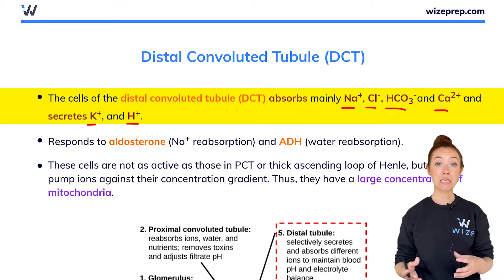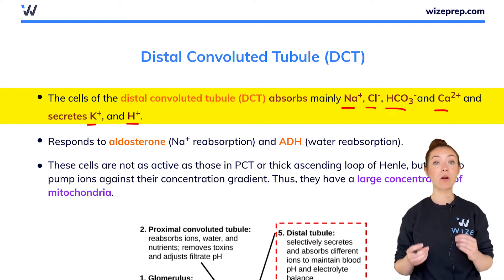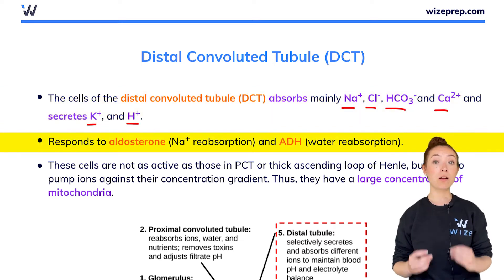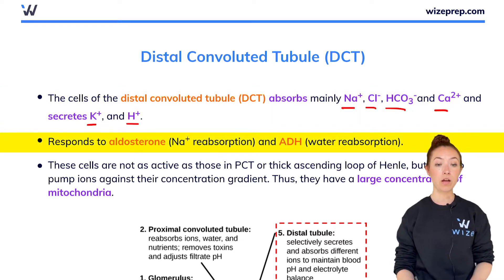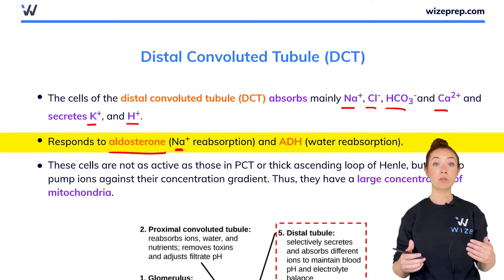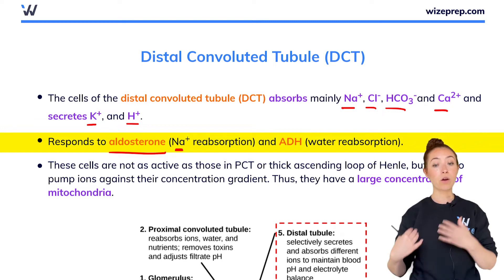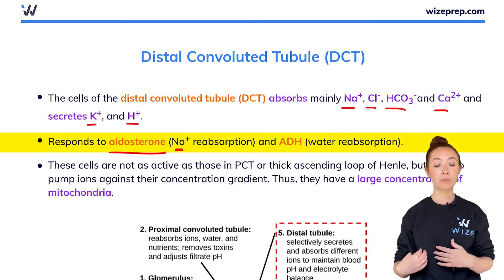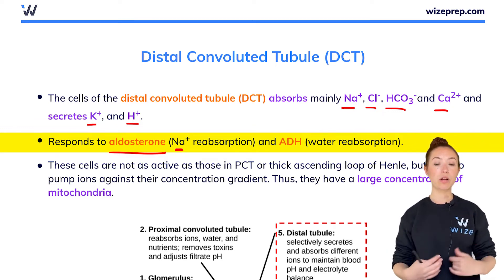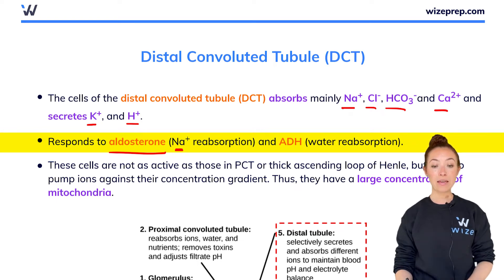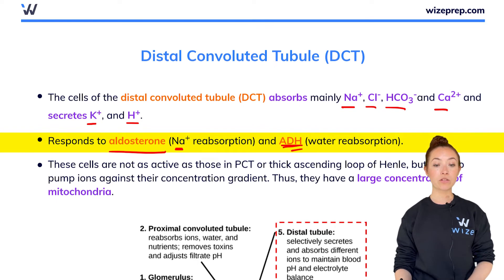The DCT is special because it's one of the parts of the nephron that actually responds to aldosterone. Aldosterone is a hormone that helps with sodium reabsorption, and it also helps with water reabsorption, because often when sodium is reabsorbed, water is reabsorbed. It also causes excretion of potassium. ADH is also able to act on the DCT, which helps with water reabsorption as well.